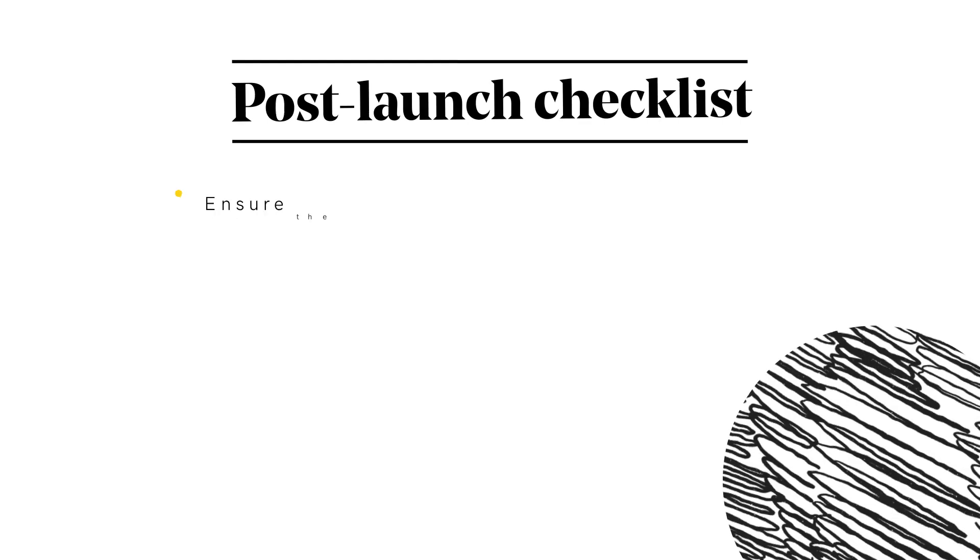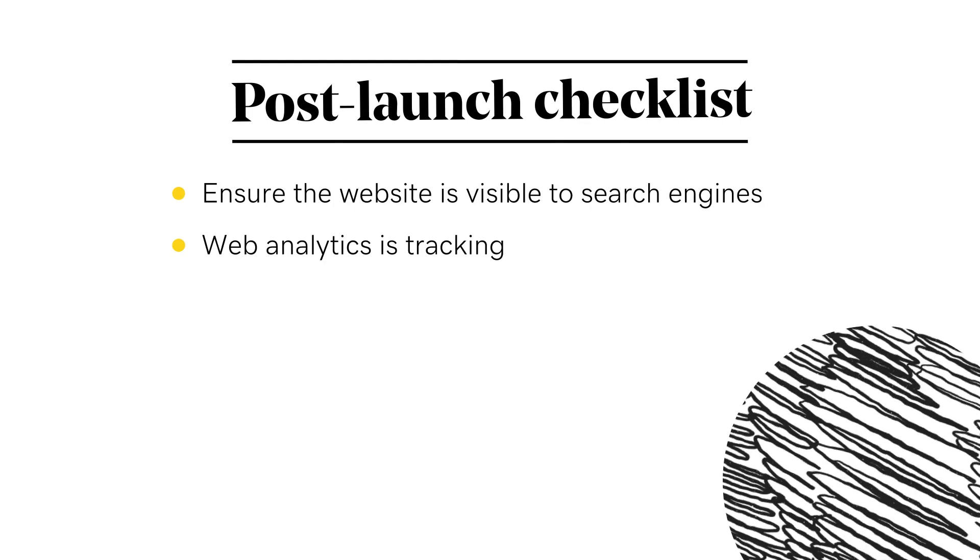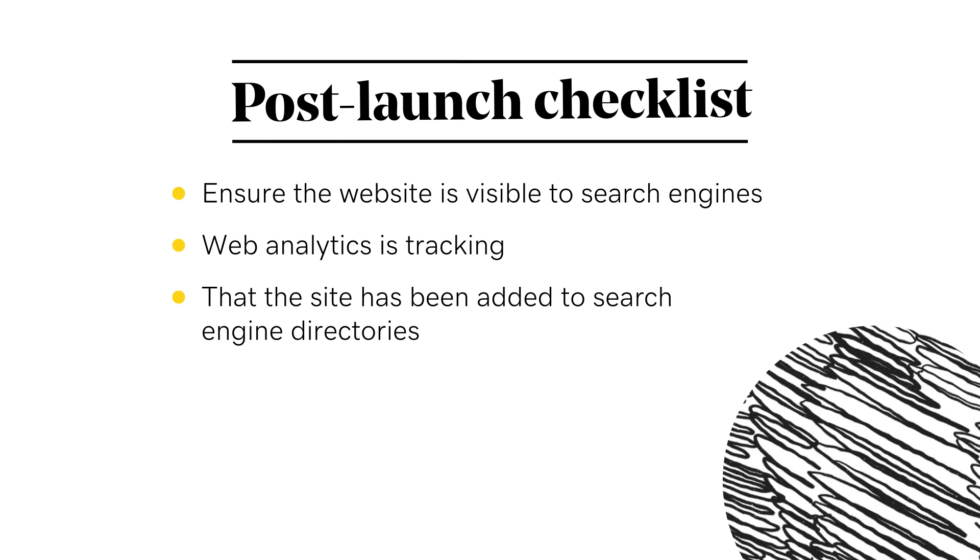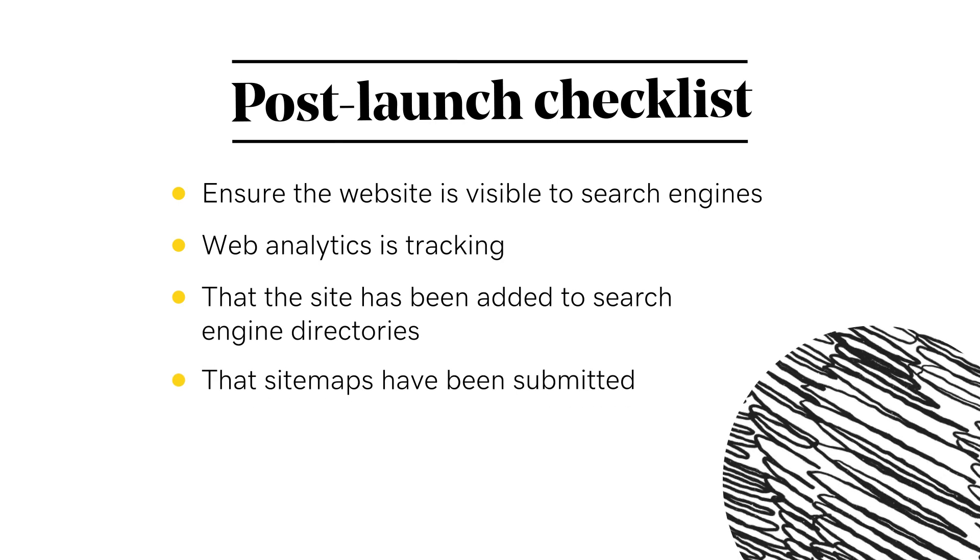If you remember our pre-launch checklist, there are a few items we carried over to this stage to double-check now that the new website is public. Ensure the website is visible to search engines, web analytics is tracking, the site has been added to search engine directories, and sitemaps have been submitted. Confirm that images, media, and links are referencing the live URL and not your staging URL — this way you can successfully delete your old staging environment. Check if fonts are integrated and working correctly on the live site. Finally, confirm that 301 redirects are in place and working correctly.